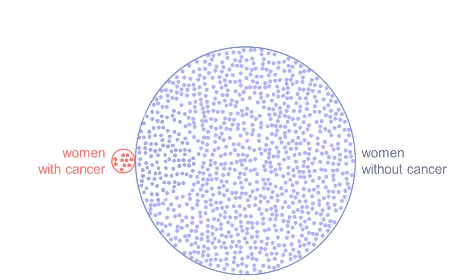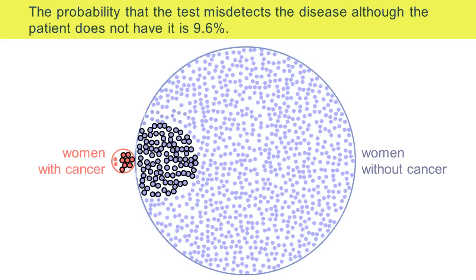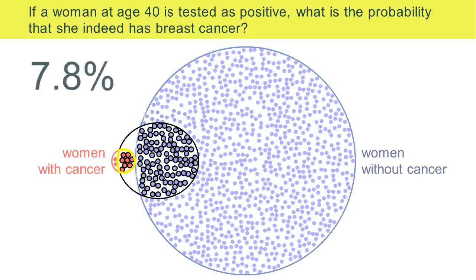The women go off to do a mammography, and 80% of the women with cancer get a positive mammography. Similarly, 9.6% of the women without cancer also get a positive mammography. Now, Barbara got a positive mammography, so she must be one of the women in the black group. The probability that she is a pink dot within the black group, and that she really has breast cancer, is approximately 7.8%.